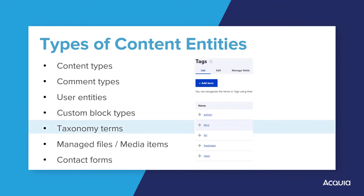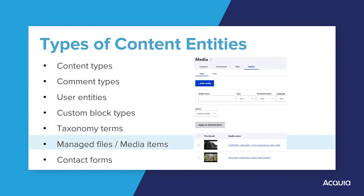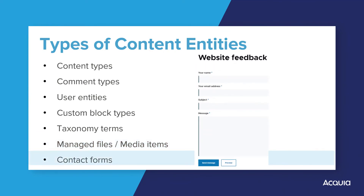Taxonomy terms are used to classify and relate content. Managed files and media items are images or attachment files that are tracked and managed by the site. For example, you could have public files which are available to anonymous users, logged-in users, and web scrapers. Or you could have private files which are only available to logged-in users. Contact forms are forms which let site visitors contact various people. By default, there is a site-wide contact form which notifies site administrators, and there are personal contact forms which notify the specific user.